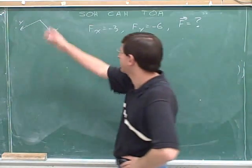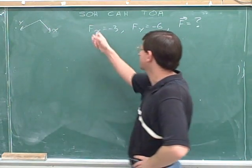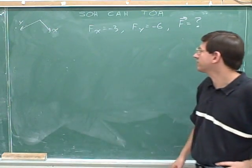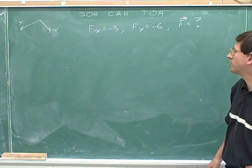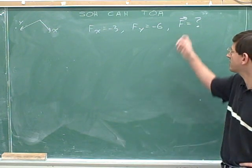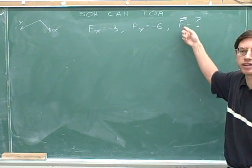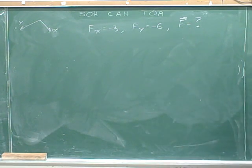Here's another problem. Here's our axes. The x component is negative 3, the y component is negative 6. Let's figure out the overall vector.